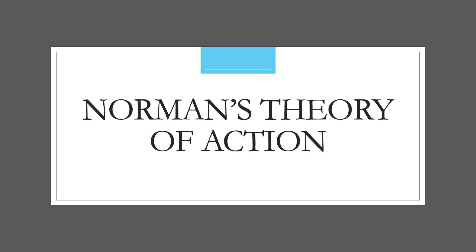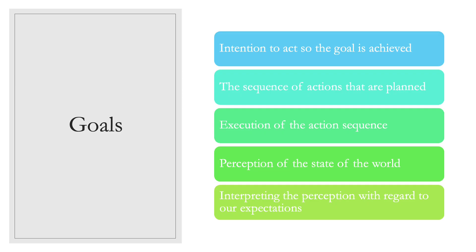Next, we're going to talk about Norman's theory of action. Norman's theory of action is really just a set of goals specified for when you are completing a cognitive walkthrough. The goals for the cognitive walkthrough are five different things: the intention to act so the goal is achieved, the sequence of actions that are planned, execution of the action sequence, perception of the state of the world, and interpreting the perception with regard to our expectations.